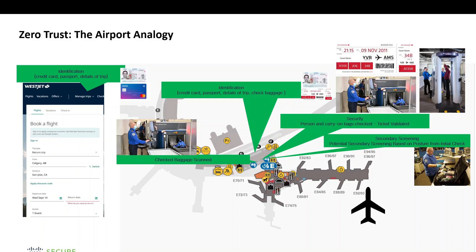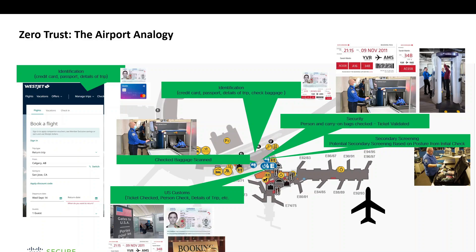If you're in Canada traveling to the US, you go through US Customs. Again, the ticket and the person are checked, background checks are potentially run, they look at trip details, ask about your hotel, how long you're staying — they're scrutinizing everything. You can see there are multiple policy decision points up to this stage, with opportunity to enforce or control the individual. At secondary screening, they're making sure you are who you say you are and you're safe to enter the country.